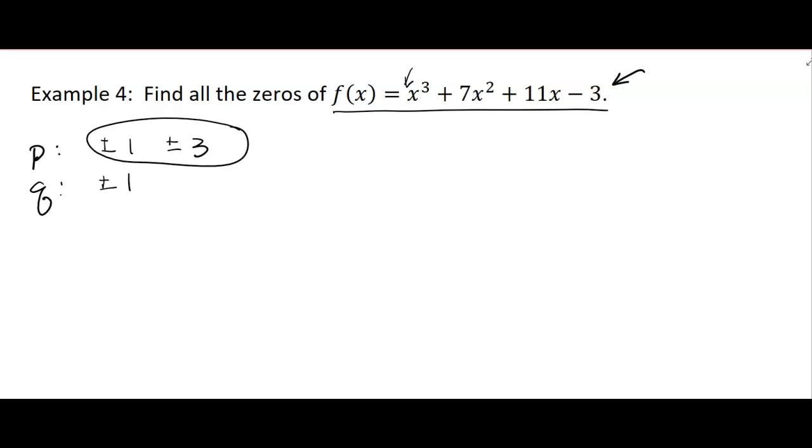So let's try 1. I always try 1 first. And we're going to synthetically divide to see if it's a 0. We'll know it's a 0 if it comes out the remainder 0. Bring down the 1. So hopefully you're still practicing your synthetic division. If you haven't done one on your own, stop the video and try this one. 1 times 1 is 1. 7 and 1 is 8. 8 times 1 is 8.